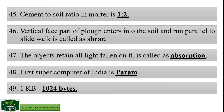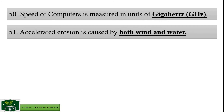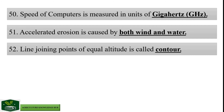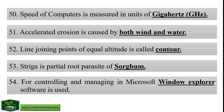1 KB is equal to 1024 bytes. Speed of computers is measured in units of gigahertz. Accelerated erosion is caused by both wind and water. Line joining points of equal altitude is called contour. Striga is a partial root parasite of sorghum. For controlling and managing in Microsoft, Windows Explorer software is used.